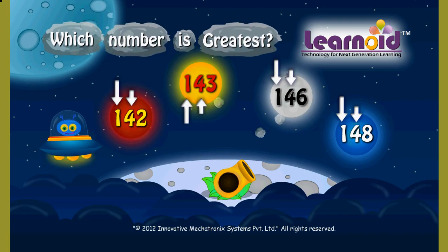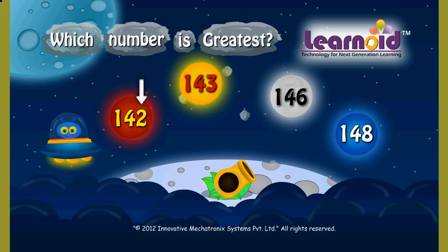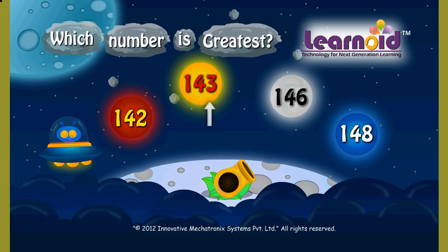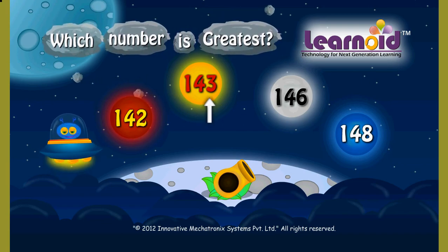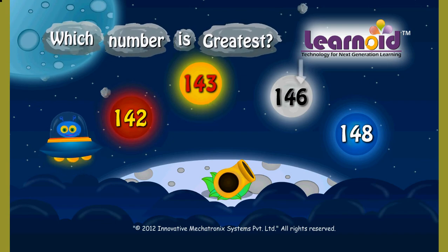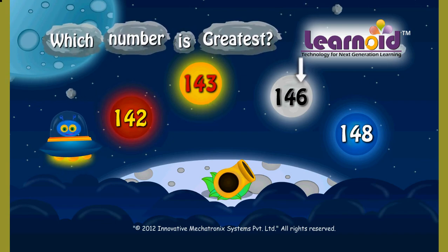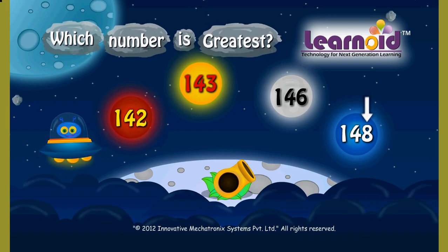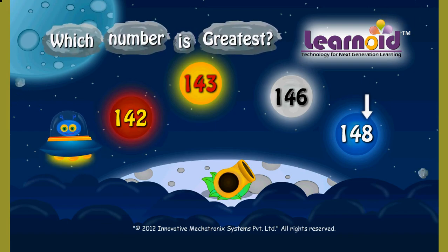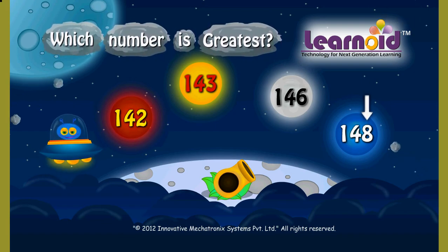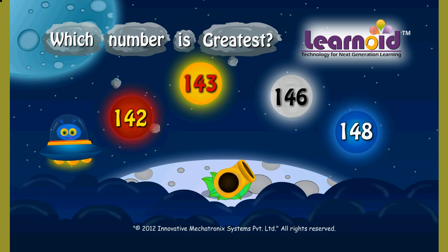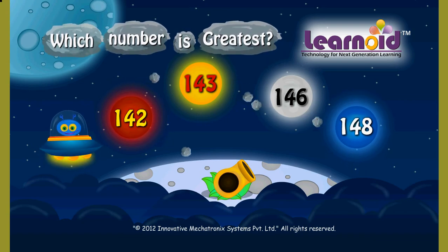So we check the third digit. It is 2 in 142, 3 in 143, 6 in 146, and 8 in 148. 8 is the greatest of all, so 148 is greatest in all.